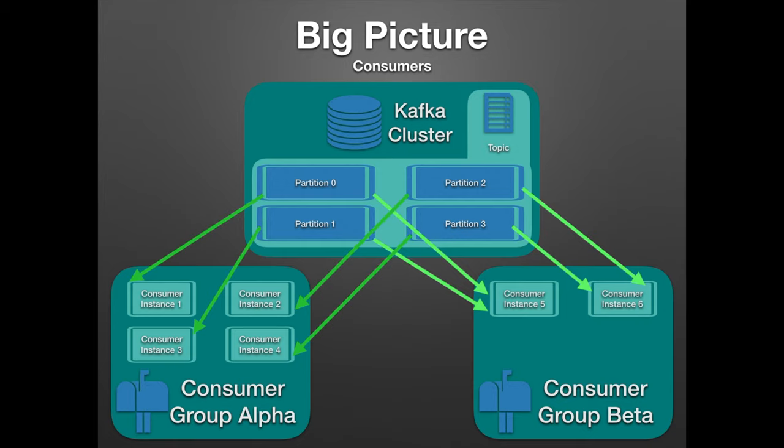For example, the group on the left is distributing partitions 0 and 1 to consumer instances 1 and 3, and then 2 and 3 to instances 2 and 4. However, the right consumer group only has two consumer instances, so instance 5 is taking partitions 0 and 1, and instance 6 is taking partitions 2 and 3. This keeps the process fast and ensures load is being distributed across the group's consumer instances.